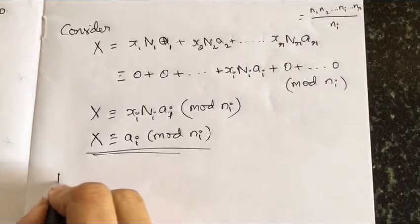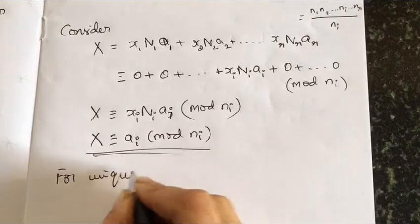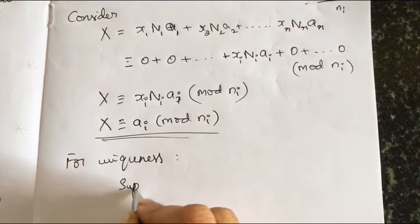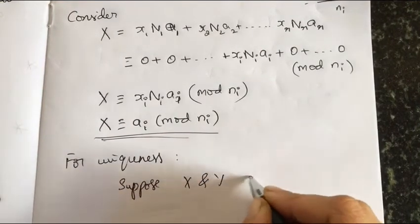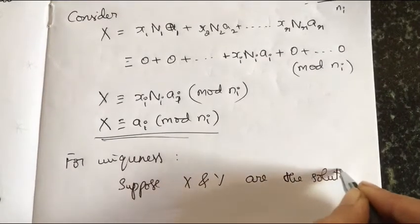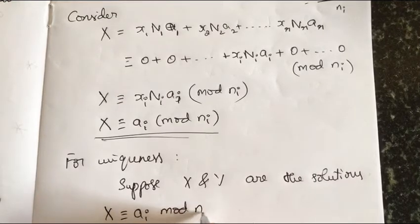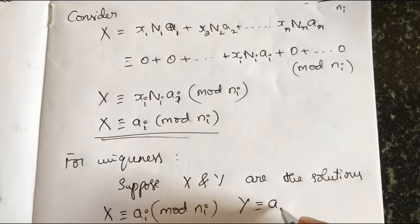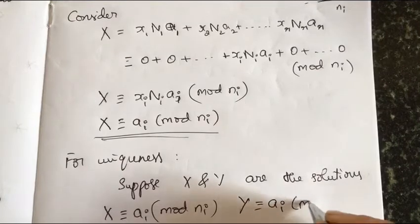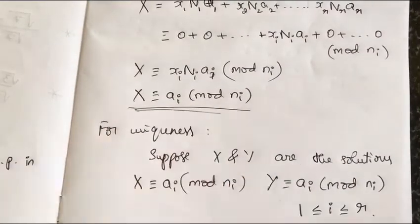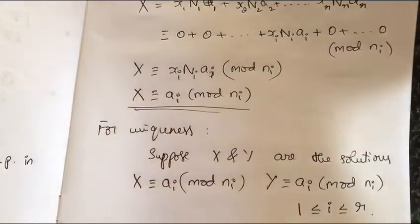Now we need to prove that this is the unique solution. For uniqueness, let us assume the system has two solutions. Suppose x and y are both solutions, so x ≡ a_i mod n_i and y ≡ a_i mod n_i for all i from 1 to r. If these two are solutions, I need to prove that they are equal.